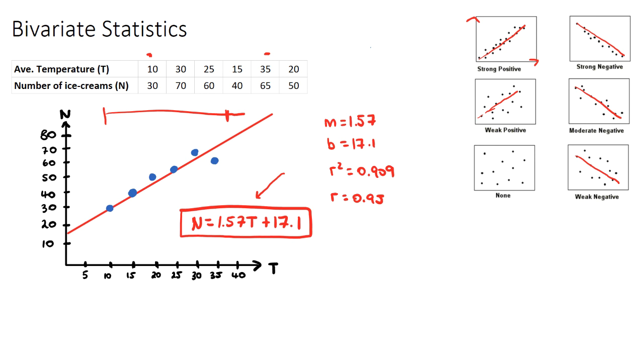Now, each of these will have an R value. R value is the correlation coefficient. So this is this value here, R. The R value is very popular, and it's commonly asked in IB questions. The R value ranges between negative one to one.